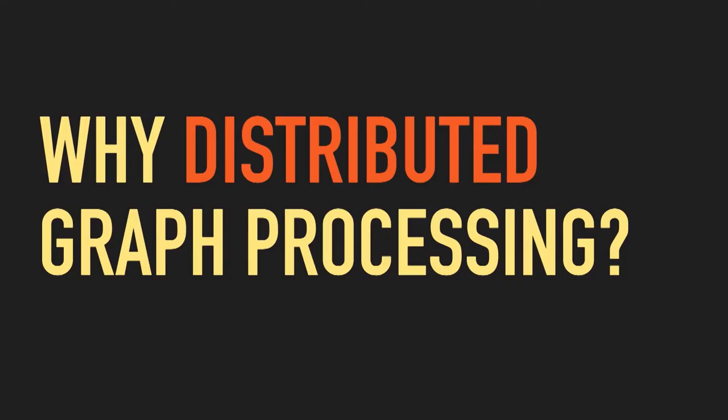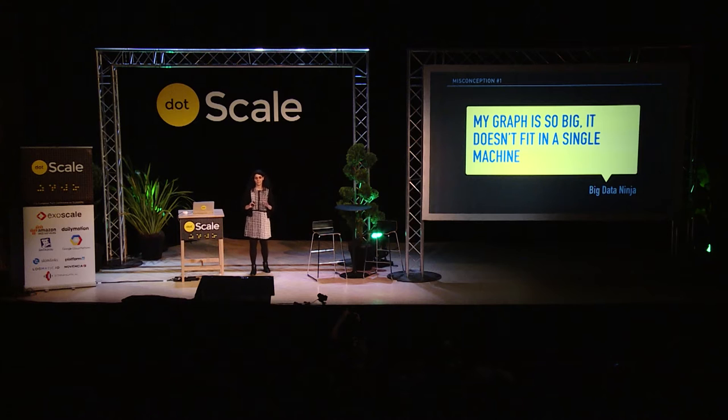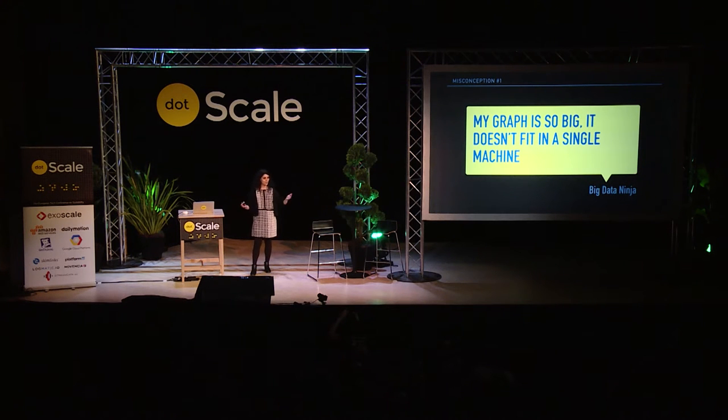There's a lot of graph technologies out there, but today I want to talk about distributed graph processing. Why distributed graph processing? The most common answer I get to this question is: I have such a massive graph, it doesn't fit in a single machine, so I need to use more than one machine. But do you really have such big graphs?